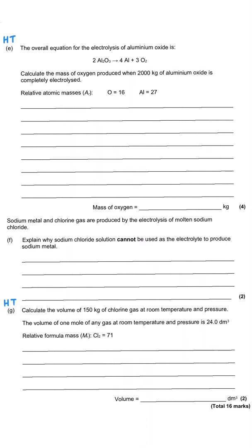This is the second part of the question. Parts E and G are actually higher-tier-only questions because of the maths involved. My recommendation for the first question in E — the reacting mass calculation — is to use the grid method.